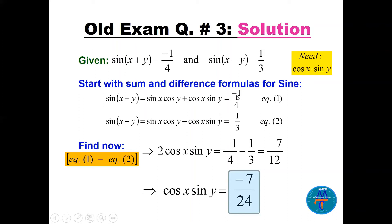Expanding: sin(x + y) = sin(x)cos(y) + cos(x)sin(y) = −1/4 — call this equation 1. And sin(x − y) = sin(x)cos(y) − cos(x)sin(y) = 1/3 — call this equation 2. Subtracting equation 2 from equation 1, the sin(x)cos(y) terms cancel and we get 2·cos(x)·sin(y) = −1/4 − 1/3 = −7/12.